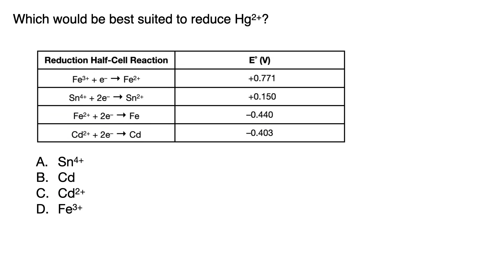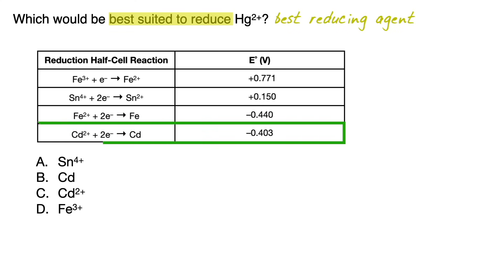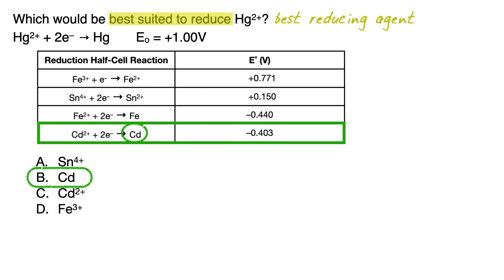Even if questions are worded something like 'best suited to reduce,' that simply means best reducing agent. So just like before, go to the most negative or least positive E value cell and choose the most negative or least positive ion or atom, without having to think about what it's reducing — even if the question stem shows the reduction reaction of the other atom or molecule. Simply choose the most negative or least positive ion or atom in the most negative or least positive E value cell.